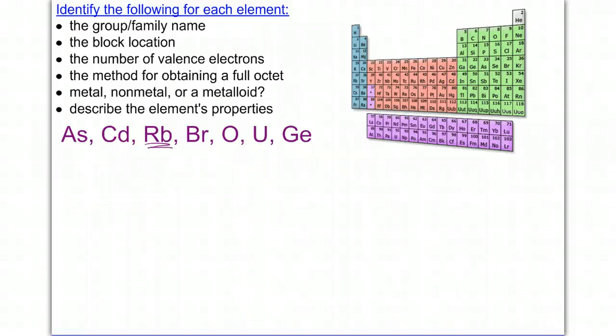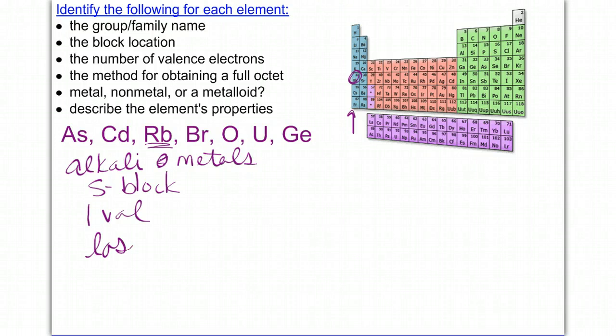Rubidium would be next. Rubidium is located here in group one, which means that it's in the alkali earth metals. I'm sorry, the alkali metals, not earth, just alkali metals. Elements in this group are located in the S block. They have one valence electron, and they're going to lose that one valence, lose one electron, in order to obtain its octet of eight electrons. We'll see later with the Bohr models exactly why does losing an electron cause an element to have an octet.